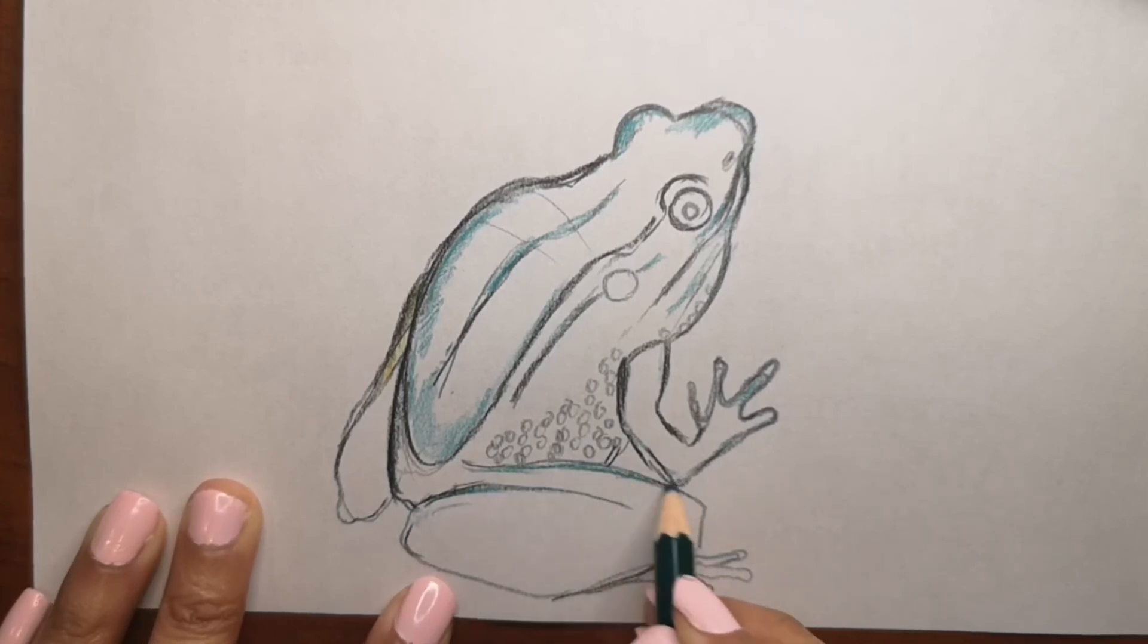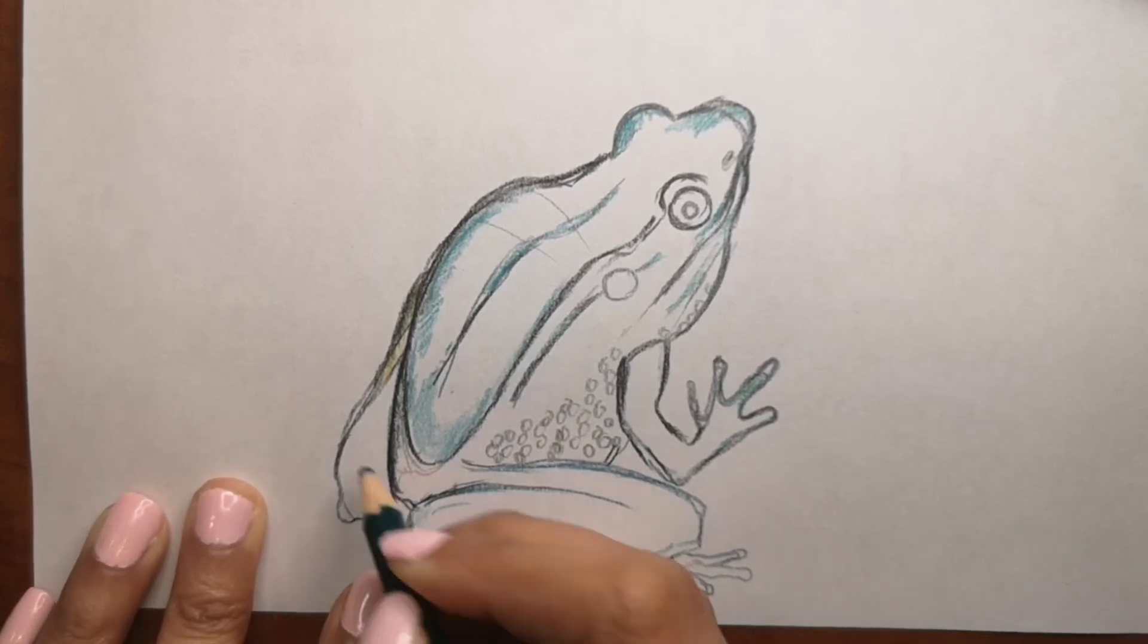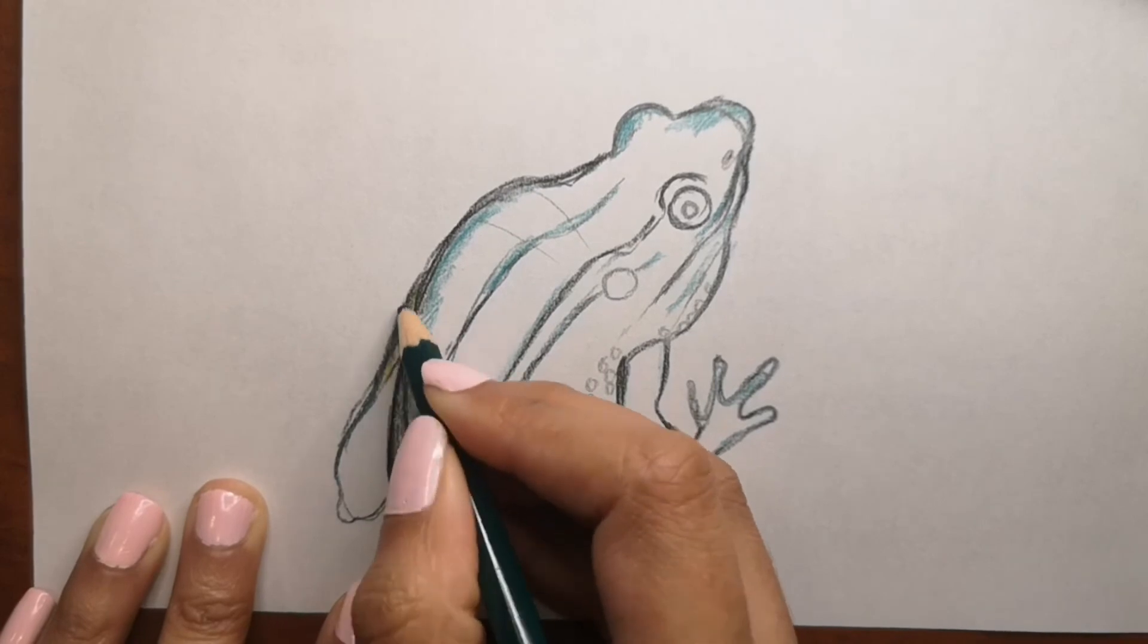A frog swallows using their eyes. Its eyes retract into its head and help push the food down its throat. It's very interesting and unusual.